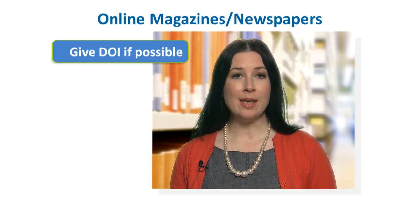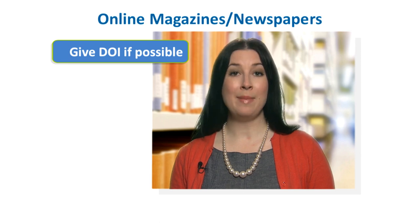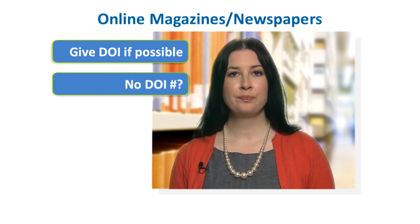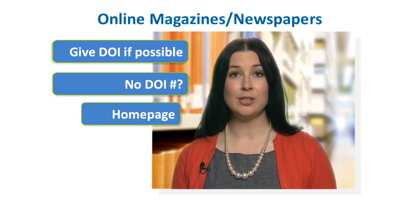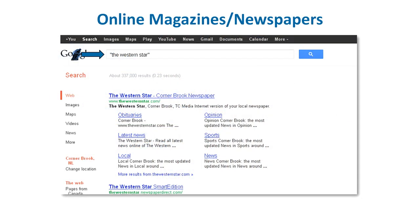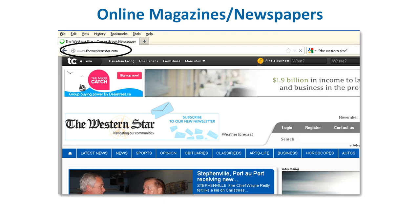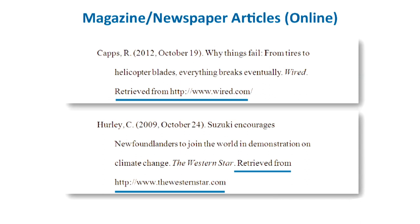For online sources, APA recommends providing the DOI, or Digital Object Identifier. Most online newspapers, magazines, and newsletter articles don't have a DOI number. In this case, APA recommends you provide the URL for the home page — don't just copy and paste a direct link to the article. This is one time when a librarian will actually tell you to use Google. Google the name of the publication; it's helpful to use quotation marks around it. This is the URL you need to copy and paste. After the page numbers, type 'retrieved from' and paste the URL of the magazine or newspaper's home page. The URL should not be hyperlinked or underlined — it should be in the same font as the rest of the reference, with no period after it.